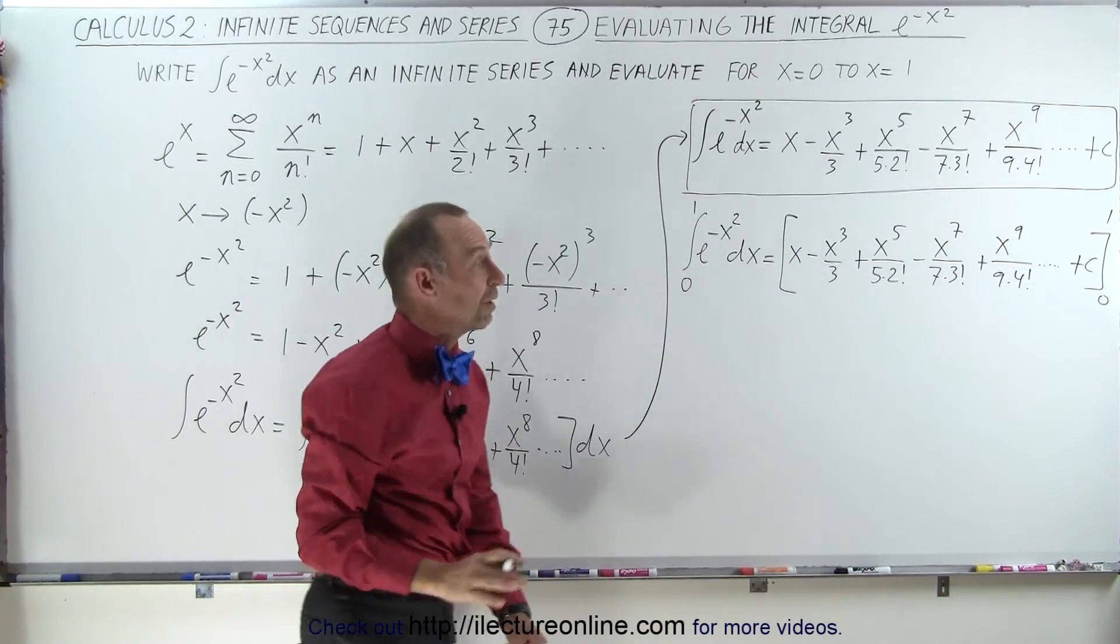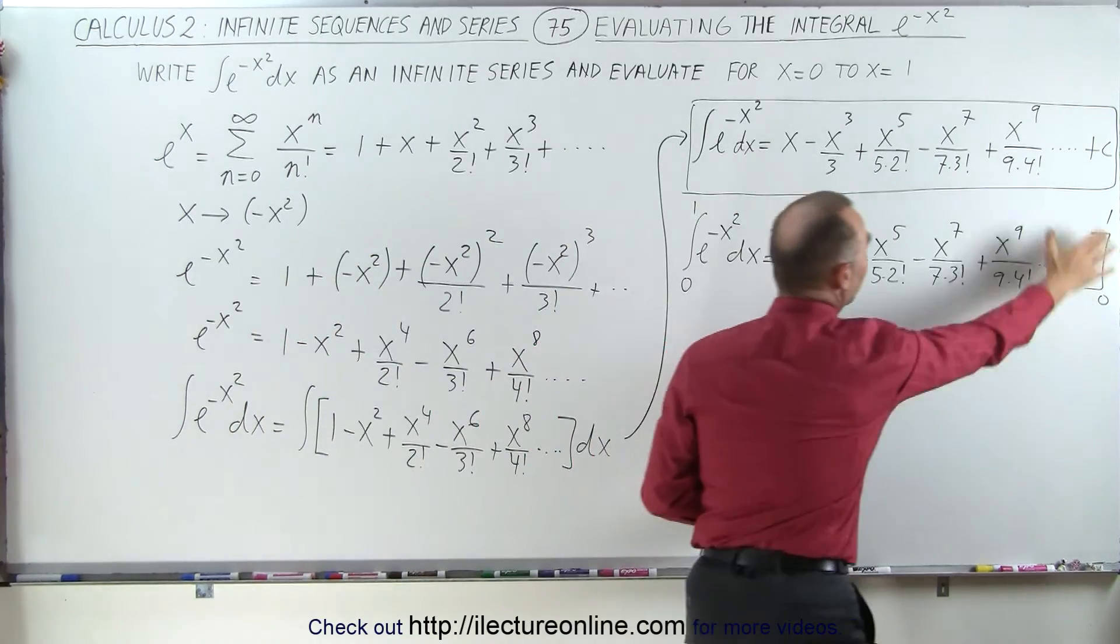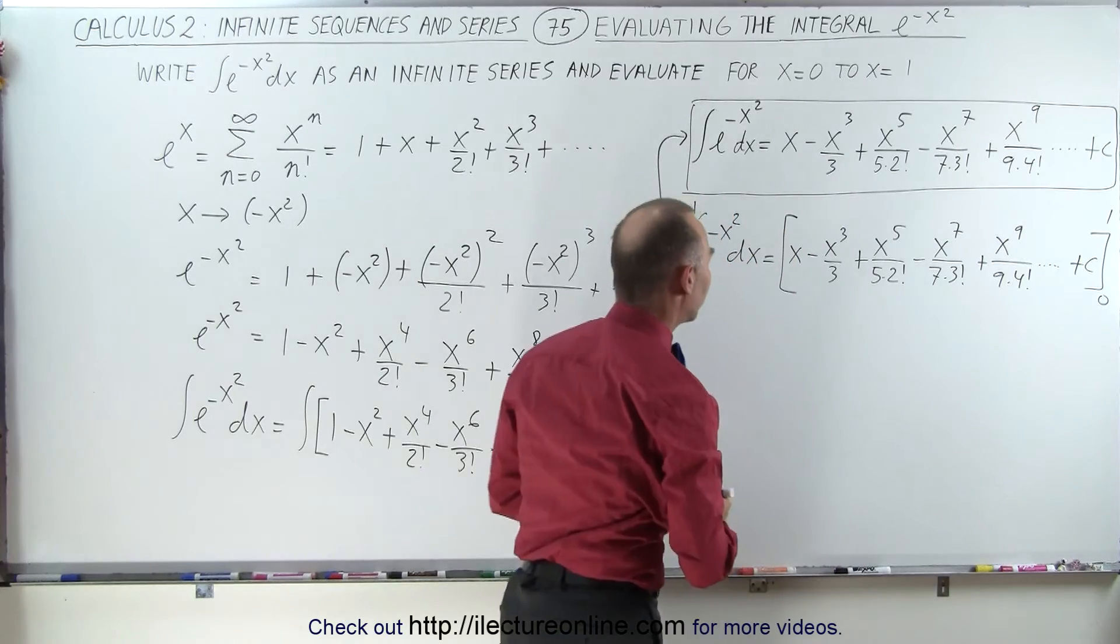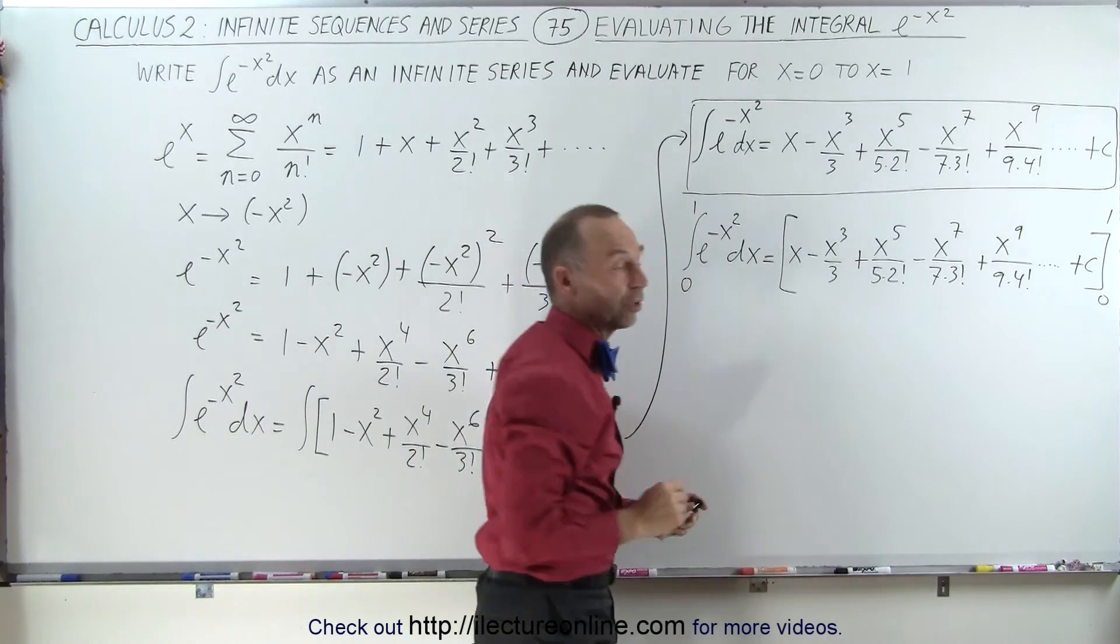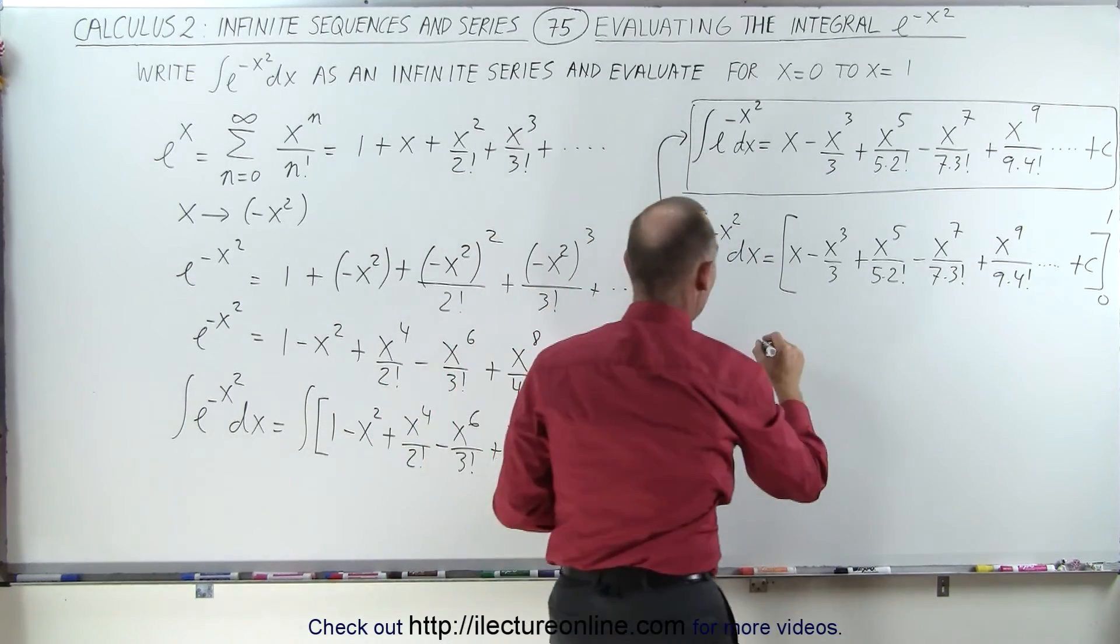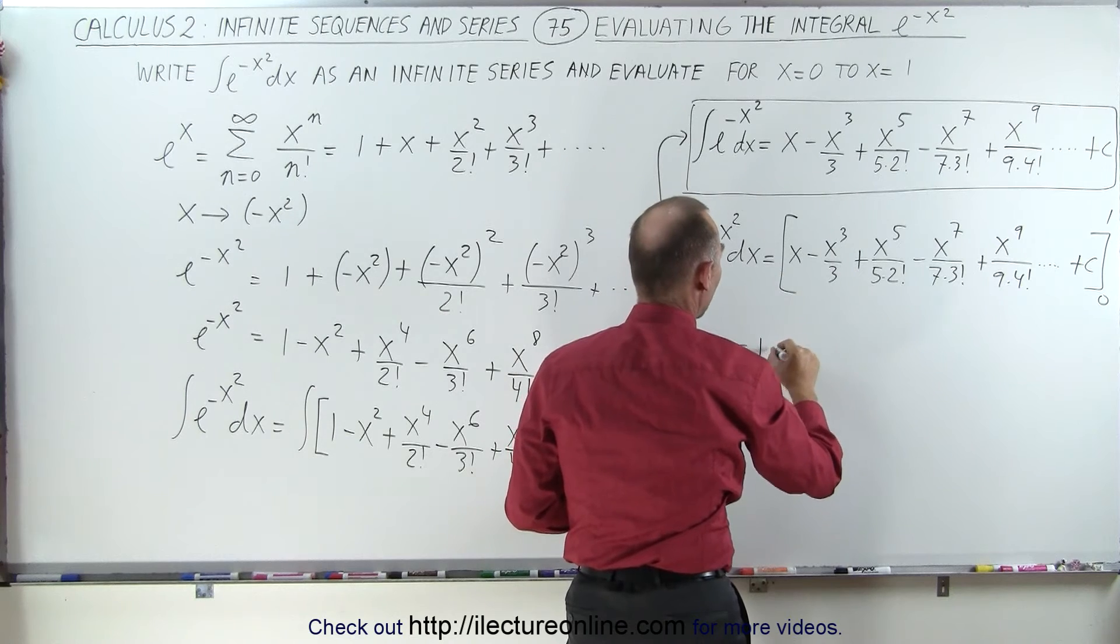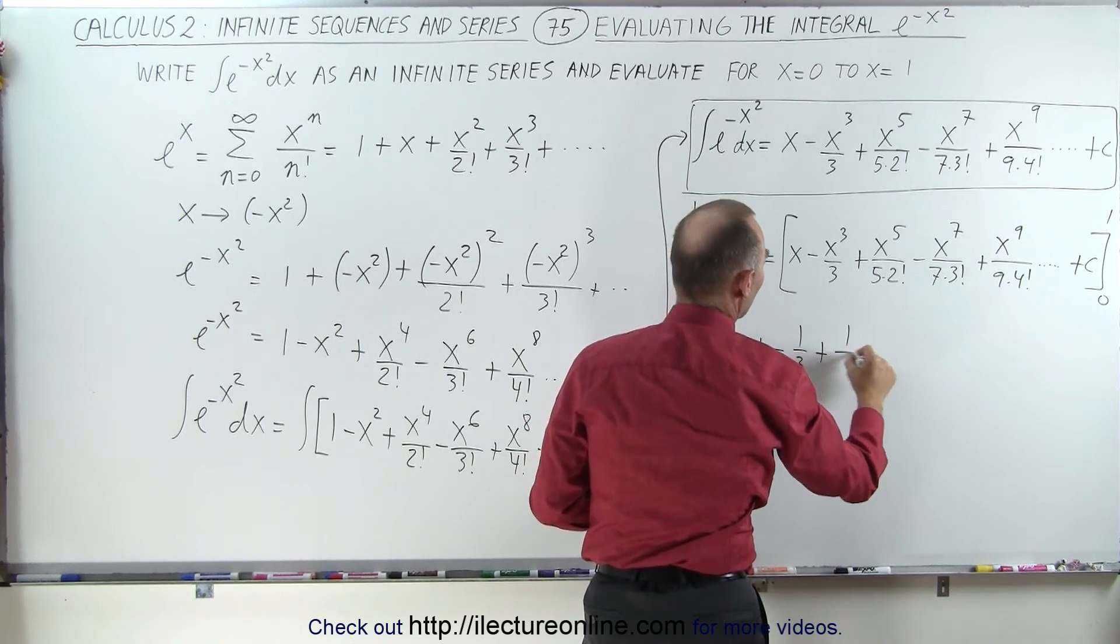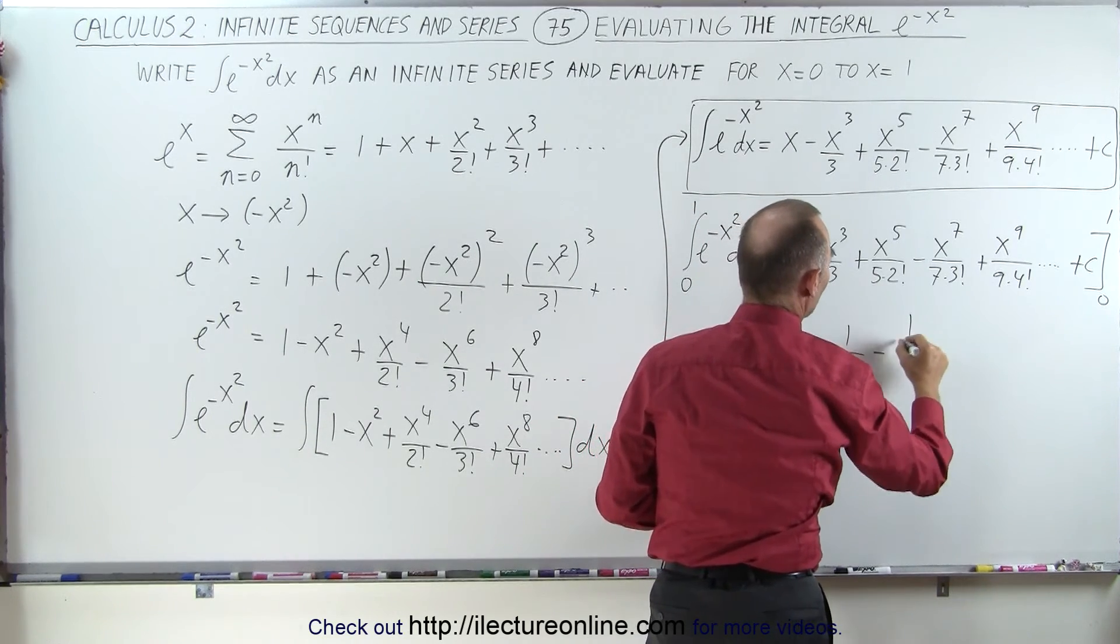Of course, the constant of integration will disappear when we plug in the limits, because first we'll plug in the upper limit, and then we plug in the lower limit, we subtract, the c will drop out. But, notice also that when we plug in the lower limit, every one of the other terms will go to 0, and that means what we have left is just the upper limit, that would be 1 minus 1 over 3, plus 1 over, that would be 10 minus 1 over,